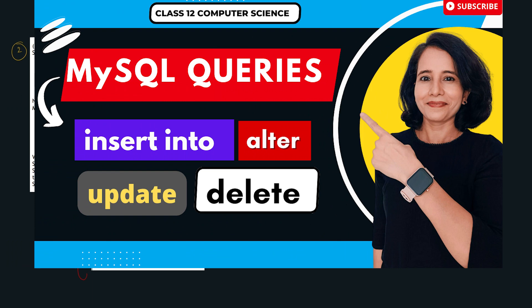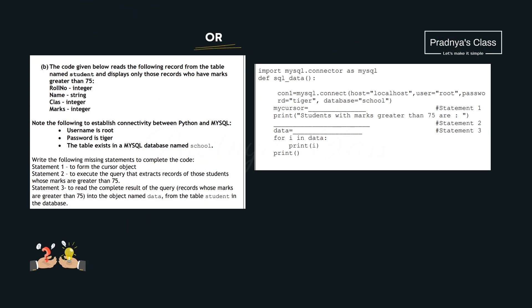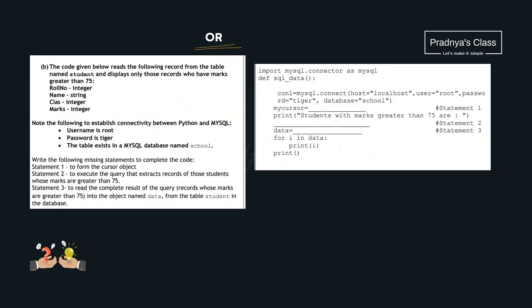If you have doubts about MySQL, there is a playlist available — please check it out. The same question has another part — let's check it. If you know the answer, pause the video and try it. Let's check out: in the first question, we need to create the cursor object. The connection was created with the variable 'con', and using the cursor function we will create the cursor object.